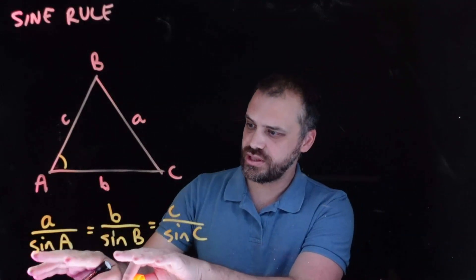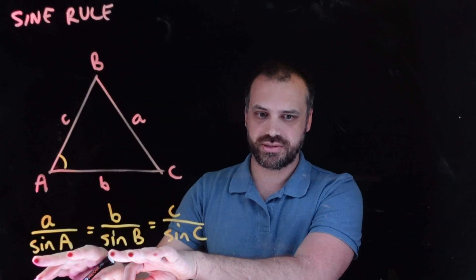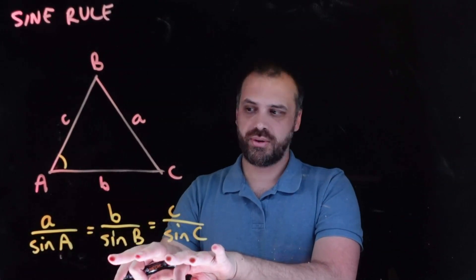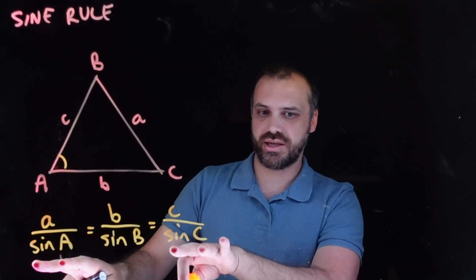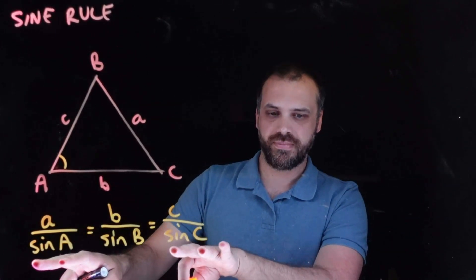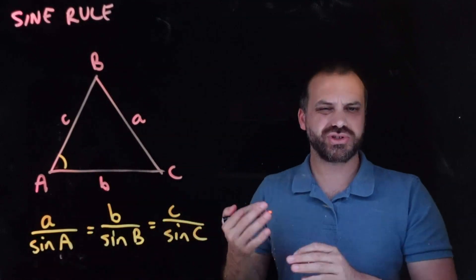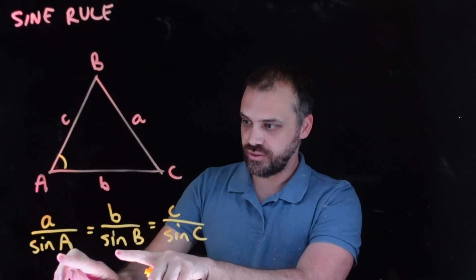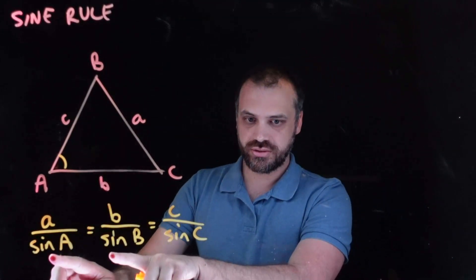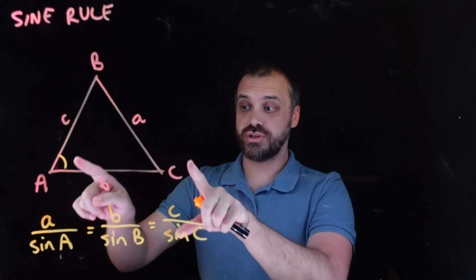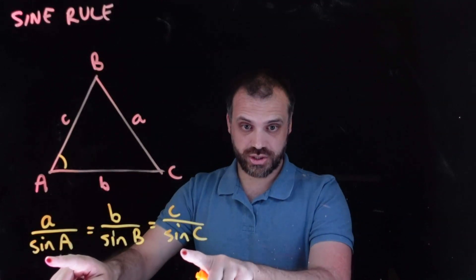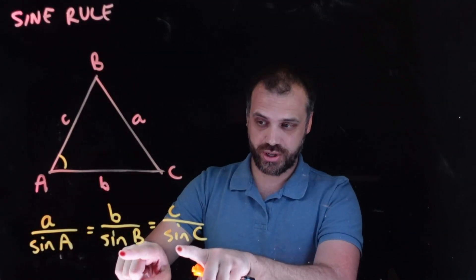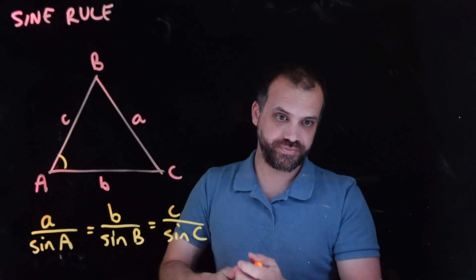We have a/sinA equals b/sinB, b/sinB equals c/sinC, and a/sinA equals c/sinC. Depending on what sides and angles we want to find, we can use whichever of these equations is most useful.